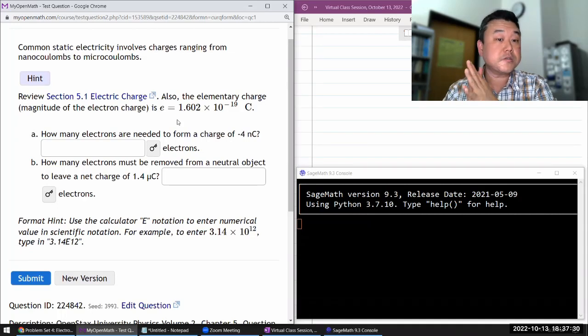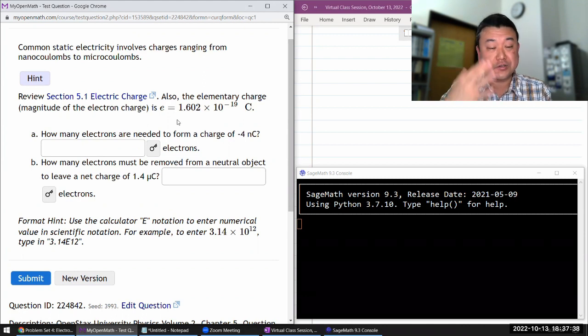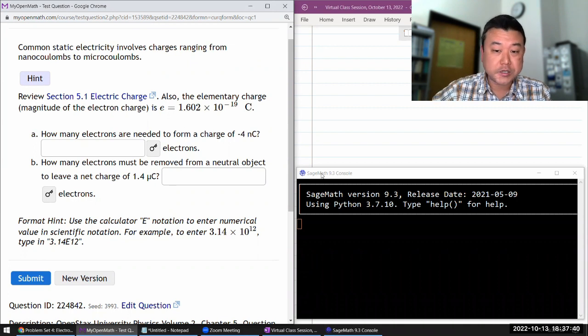Common static electricity involves charges ranging from nanocoulombs to microcoulombs. One coulomb of charge is actually a pretty large amount of charge.